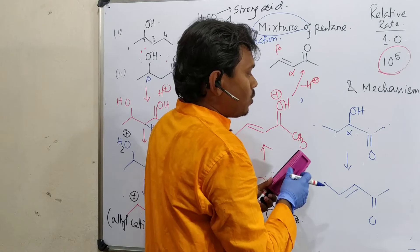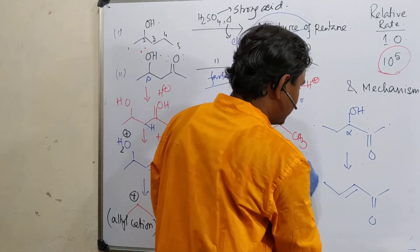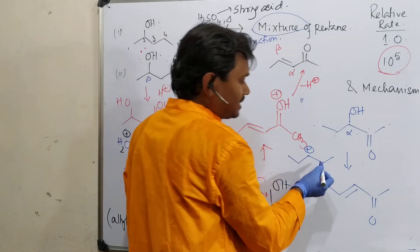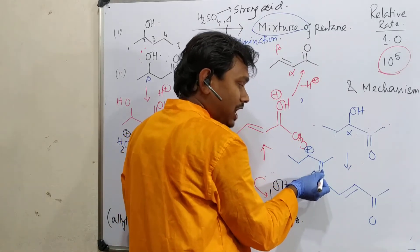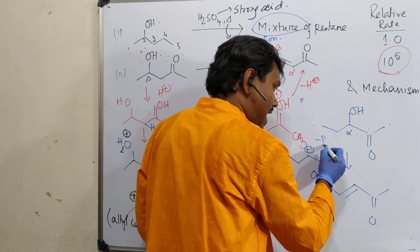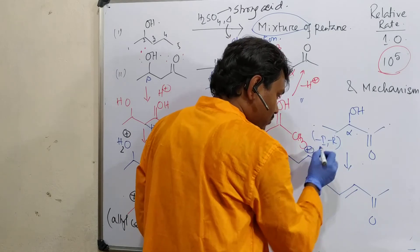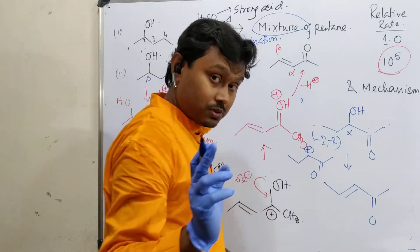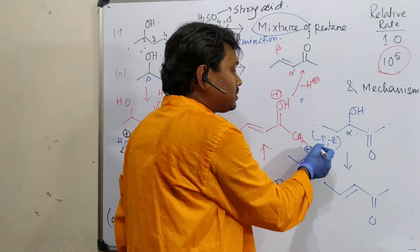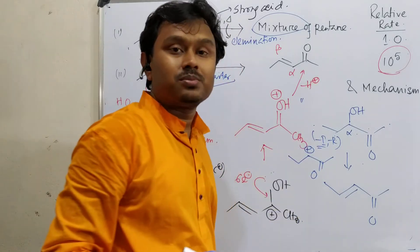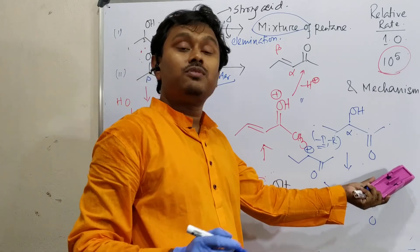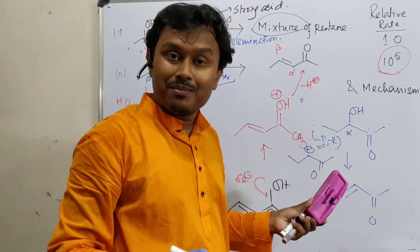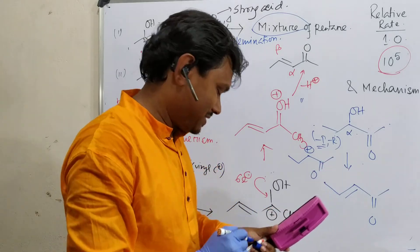For this alpha case, the intermediate will be produced which looks like this. And see, the positive charge is alpha to carbonyl. Because carbonyl has minus I and minus R. Why minus R? Because this is sp2, conjugation is possible. This makes this system very unstable. That's why dehydration will be very, very slow. But the ultimate product will be same. That's the interesting information. This is the end of this discussion.